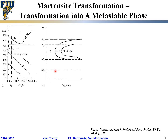If we cool fast enough, we may miss the tip of the nose on the TTT diagram. Missing the tip of the nose means we will not form any gamma to alpha plus cementite phase transformation. Instead, we will run directly into the so-called Ms and Mf — the martensite phase transformation temperature curves.